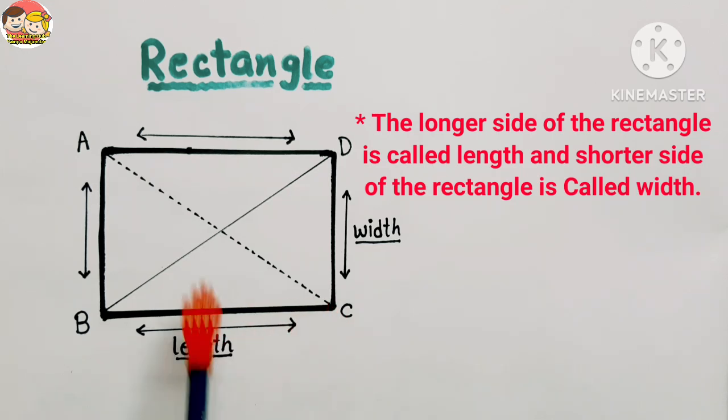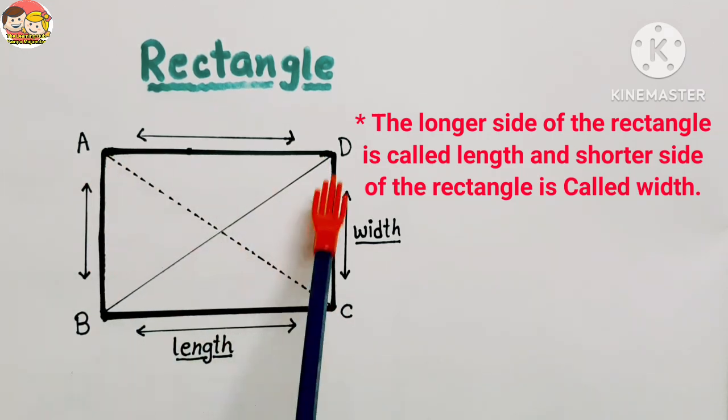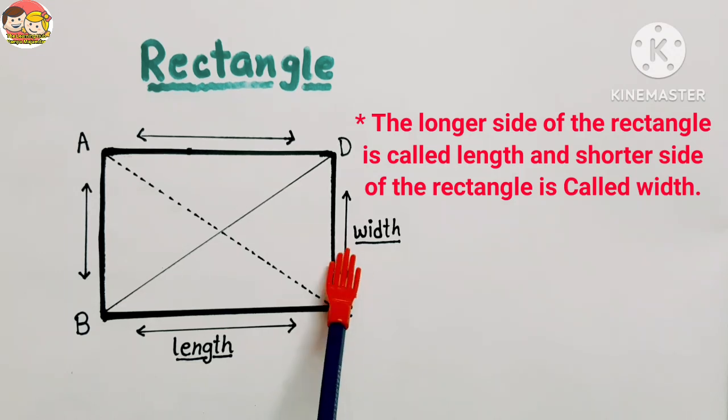And the opposite sides are equal and parallel to each other. The longer side of the rectangle is called length, and the shorter side of the rectangle is called width.